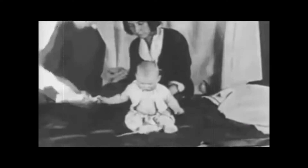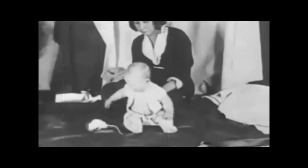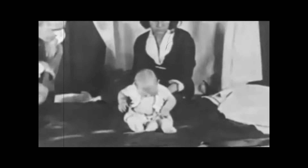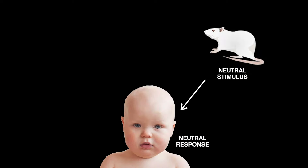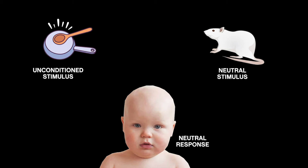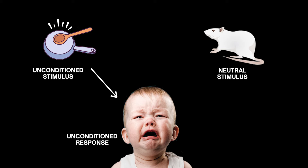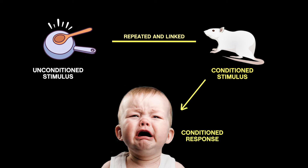Watson then paired the loud noise with the presentation of the white rat to Little Albert and repeated this many times. Very quickly, Albert was conditioned to expect the frightening noise whenever the white rat was presented. Very soon, the white rat alone could induce a fear response in Albert. The rat initially was a neutral stimulus with a neutral response — no sign of fear from the child. The loud noise was the unconditioned stimulus and the crying the unconditioned response. The pairing of them both together turned the rat into a conditioned stimulus and resulted in the same, but now conditioned, response.